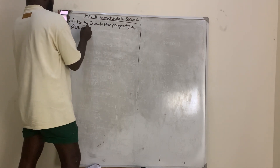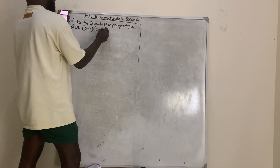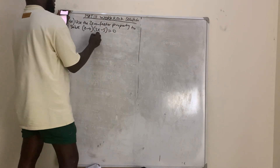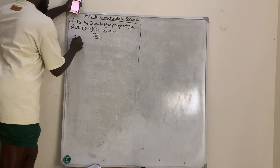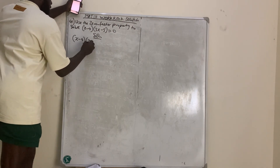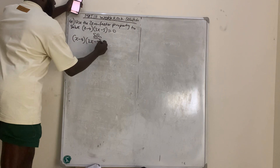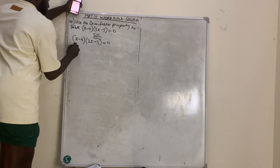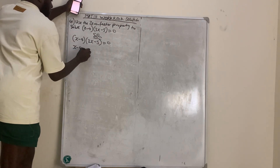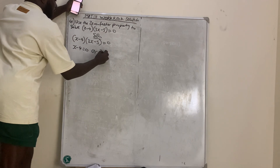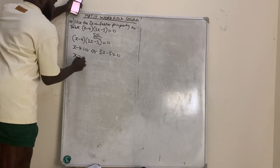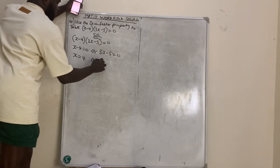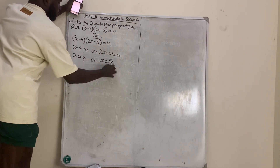Solve (x minus 4)(3x minus 5) equals zero. Solution: when the product of two things is zero, one of them must be zero. So either x minus 4 equals zero, or 3x minus 5 equals zero. Collecting like terms gives x equals 4 or x equals 5 over 3.